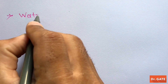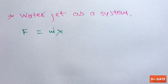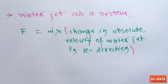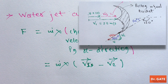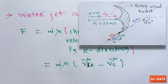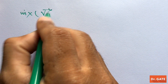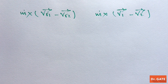If we take the water jet as a system, then the tangential component of force is m-dot into the change in absolute velocity of the water in the x direction. Mathematically it is m-dot into absolute velocity at inlet minus absolute velocity at outlet. Note that here we have taken only the absolute velocity component, because when you are inside the water jet, you will observe only the absolute velocity. It is interesting to know that the tangential component of force for bucket as a system and for water as a system will both be the same.